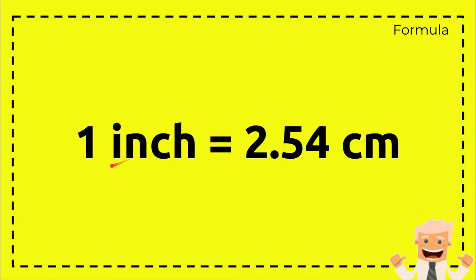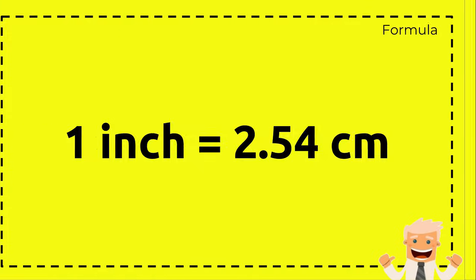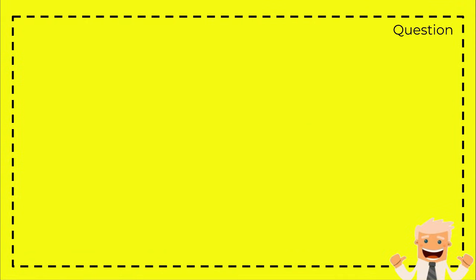This is the formula of the conversion between inch to centimeter. So one inch equals 2.54 centimeters. All right, that's the formula as well as the answer that you need, but we're not stopping only this far.